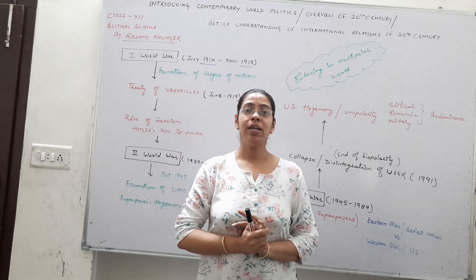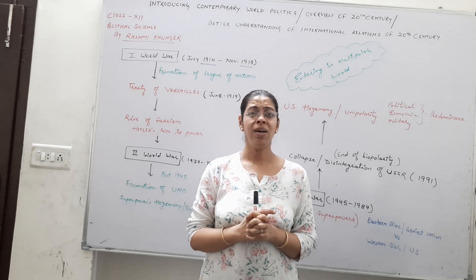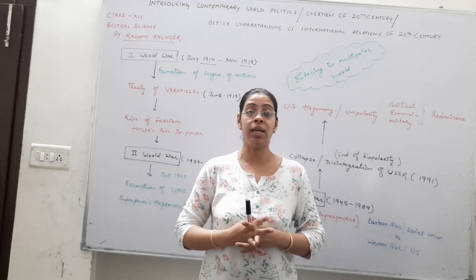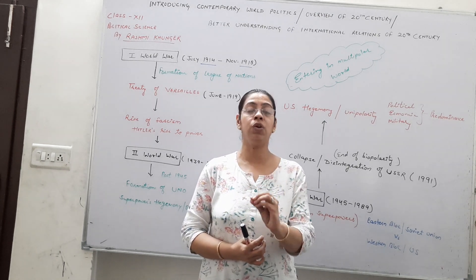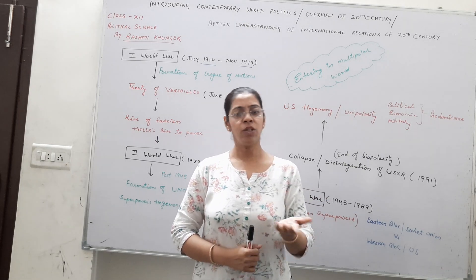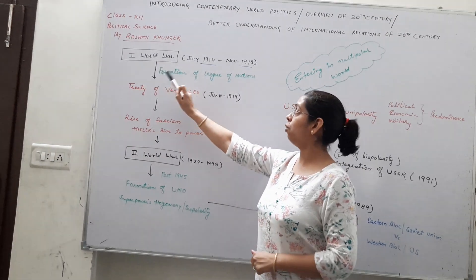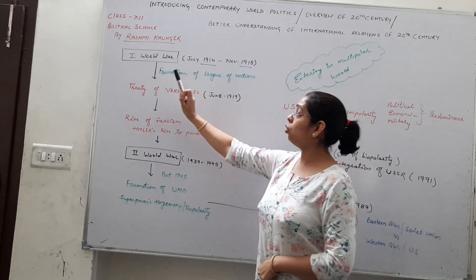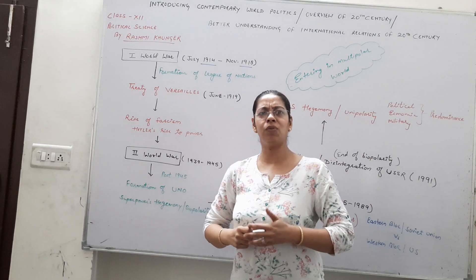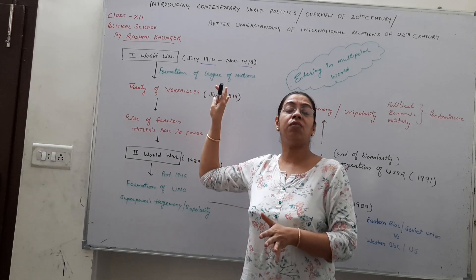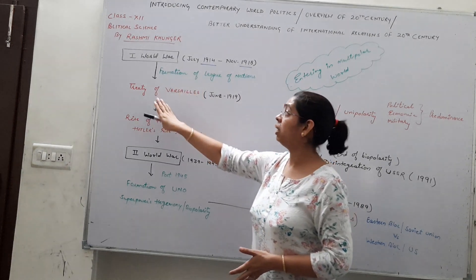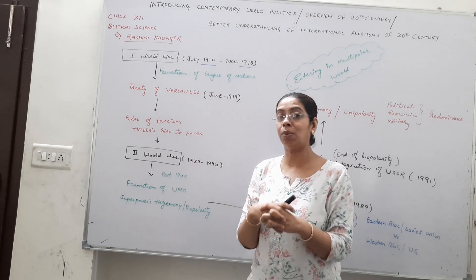When we talk about a century, there are many important things. The 20th century is very important for so many events and incidents, especially world wars. The First World War — time period 1914 to 1918 — was followed by the formation of an international organization, the League of Nations. The Treaty of Versailles in June 1919, which you have already studied in 9th class in the Nazism chapter, was considered an unfair treaty.